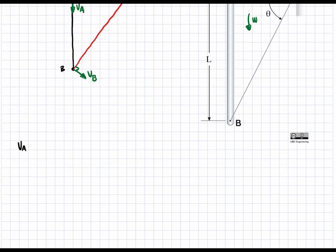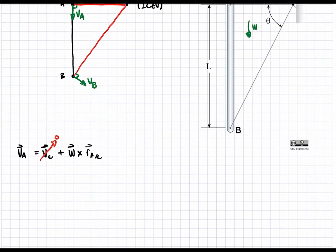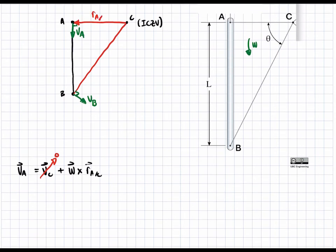We have velocity of A is equal to VC plus omega cross R of A with respect to C. From here, we can instantly cross out VC, because we said that VC is the instantaneous center of zero velocity. So that has a velocity of zero. We're left with the term omega cross R of A with respect to C. Now R of A with respect to C is the following vector over here that I just drew in red.